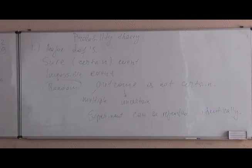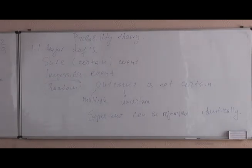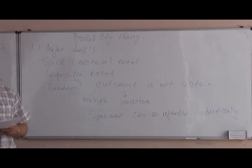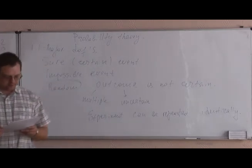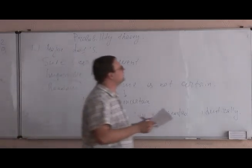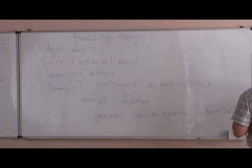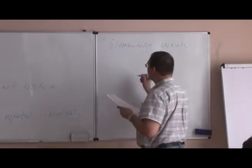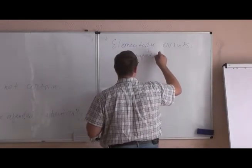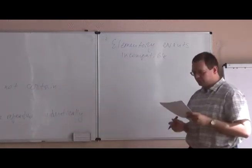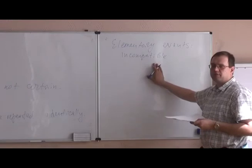Also, if you are a girl and you would like to marry this boy — if you propose to the girl and say 'will you marry me,' it's also kind of a random answer. It's not exactly random, but uncertain. So we assume that those elementary events would be incompatible. Incompatible random events means only one outcome is possible.